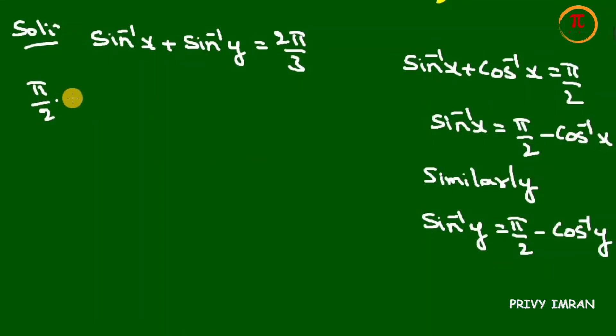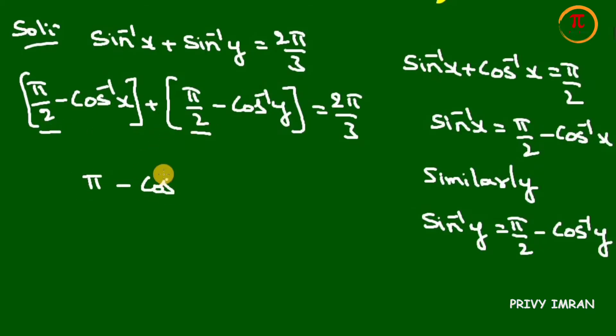Then π/2 minus cos inverse of x plus π/2 minus cos inverse of y equals 2π/3. Here π/2 plus π/2 value is π and the remaining terms stay as is.